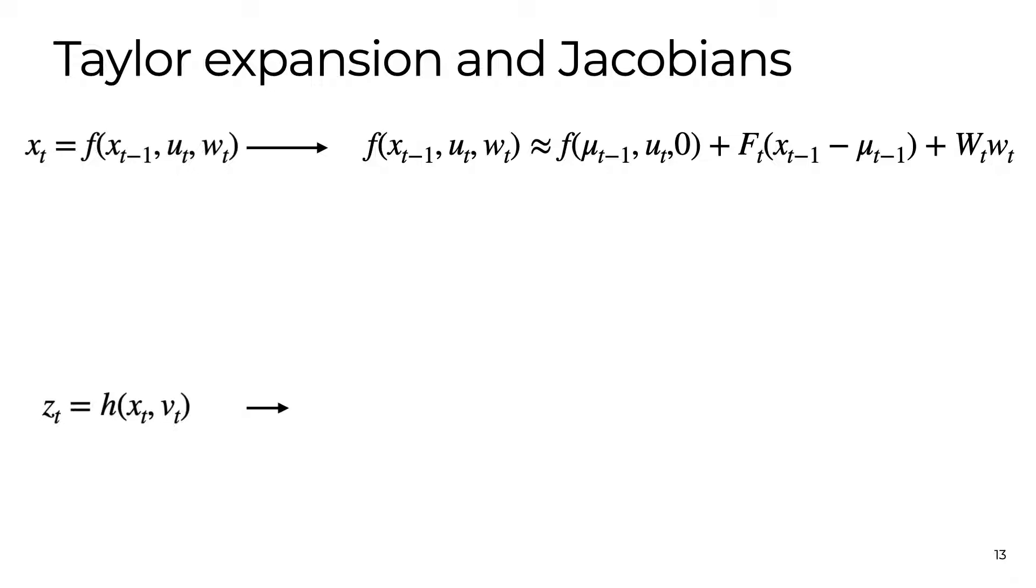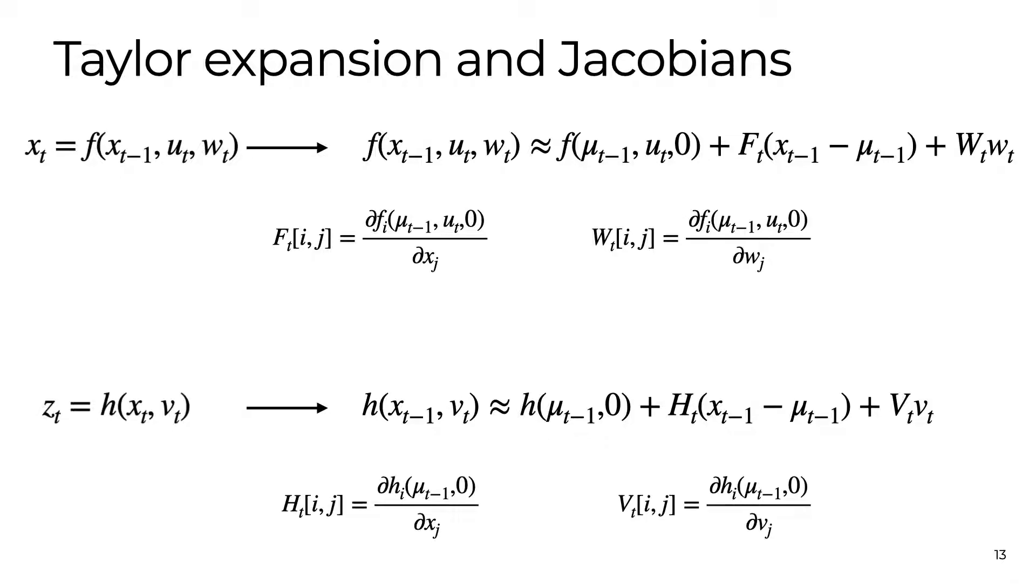In a first order Taylor series expansion, we need to find the matrices of partial derivatives called the Jacobians. In this case, we actually need four Jacobian matrices which capture all of the dependencies between the states and the noise parameters.